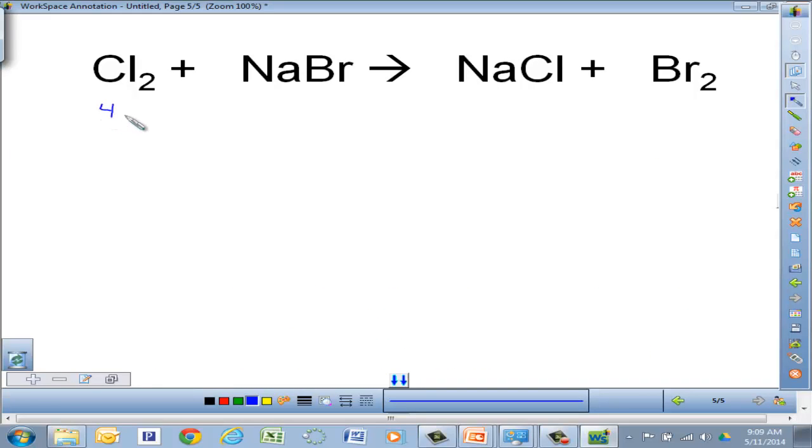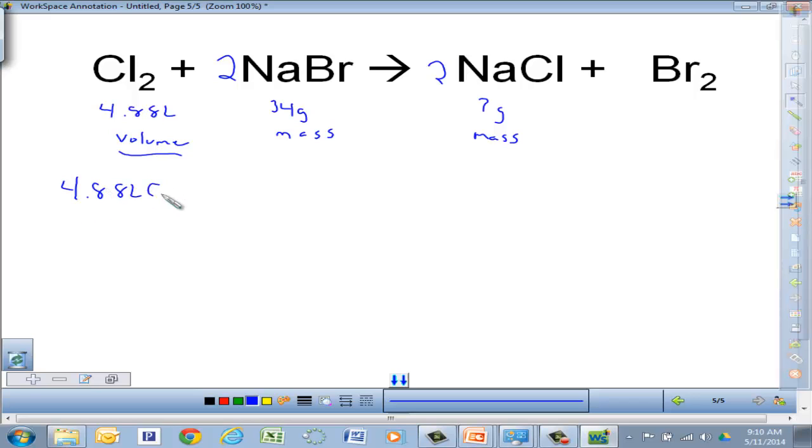If we think about what was given to us, it said 4.88 liters of chlorine. It said 34 grams of that. And then the question was how many grams of that. So what I want you thinking about is this is a volume. That's a mass. And this over here, grams, is a mass also. So when I go through and balance, I've got a 2 there and I've got a 2 there. So I'm going to start off with this one right here. This is a volume and we're coming over to a mass. Remember, take one of your reactants, convert it to your product. So we're going to start off 4.88 liters of Cl2.